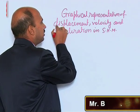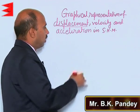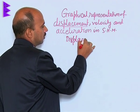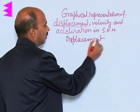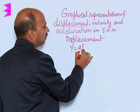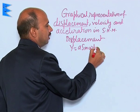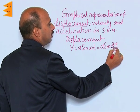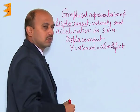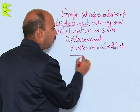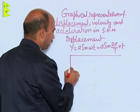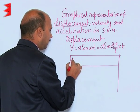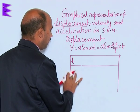First let us take displacement. For the displacement we can write y is equal to a sin omega t, that is a sin 2 pi upon t into t. Now, if you take all the values like this is here, here we take time t and here we take y.